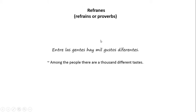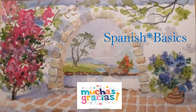The last slide here is a simple refrain: entre las gentes hay mil gustos diferentes — among the people there are a thousand different tastes. We've just finished this module. I want to thank you for watching Spanish Basics. Please subscribe to the Spanish Basics channel and you'll receive notification for new modules as they're developed. Muchas gracias, hasta luego.